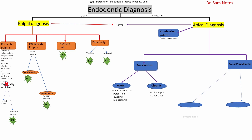Apical periodontitis is also divided into symptomatic and asymptomatic types. In symptomatic apical periodontitis, the tooth is tender to percussion and there is widening of the PDL space. In asymptomatic apical periodontitis, there are no symptoms — the patient has no idea. The landmark finding is a periapical lesion at the root apex, which may be a cyst or granuloma, often associated with deep caries.